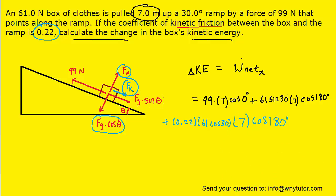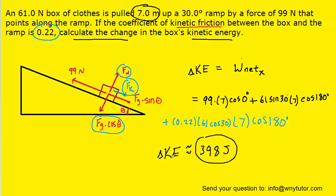Finally, we pick up our calculators and punch all three terms in. We get approximately 398 joules as the correct answer. This is the net work done on the box and therefore the change in kinetic energy, since the change in kinetic energy and the net work are equal.